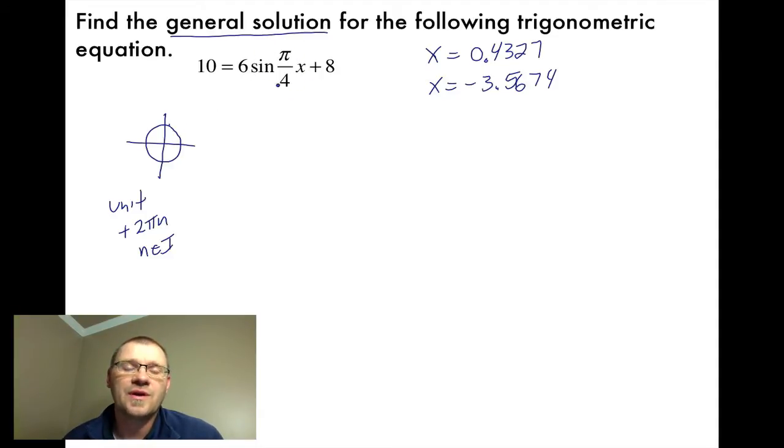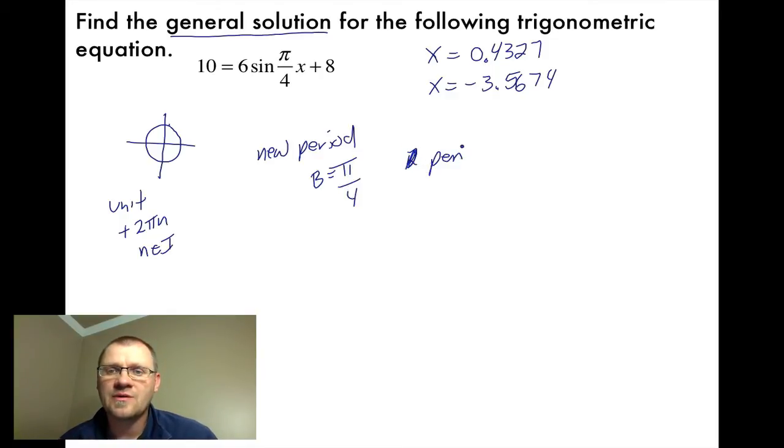When we're talking about the unit circle, we always added plus 2πn at the end, and the n was any integer. And the reason we did that was because the period of a sine or a cos graph was 2π. So it took one complete revolution until we get back to the same thing. But our function has changed. It's not a regular sine function, not a regular cosine function anymore. There's definitely a horizontal stretch here. So what we need to find out is the new period length.